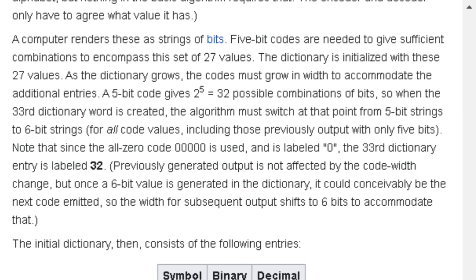There are thus 26 symbols in the plain text alphabet, 26 capital letters A through Z, and the pound character represents a stop code. We arbitrarily assign these the values 1 through 26 for the letters and 0 for pound. The encoder and decoder only have to agree what that value is. A computer renders these strings of bits. 5-bit codes are needed to give sufficient combinations to encompass this set of 27 values. The dictionary is initialized with these 27 values. As the dictionary grows, the codes must grow in width to accommodate the additional values. A 5-bit code gives 2^5 equals 32 possible combinations of bits. So when the 33rd dictionary word is created, the algorithm must switch at that point from 5-bit strings to 6-bit strings.